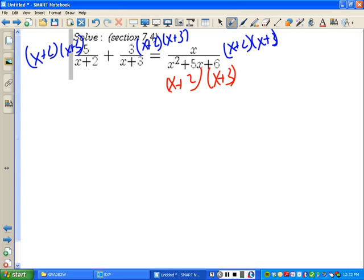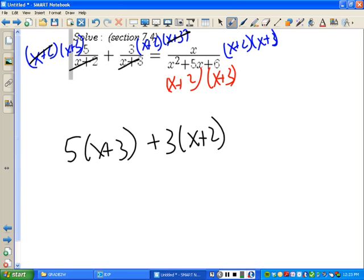Now, what happens when you do that? X plus 2, X plus 2 cancel, leaving you 5, X plus 3. X plus 3, X plus 3 cancel, leaving you 3, X plus 2. X plus 2, X plus 2, X plus 3, X plus 3 all cancel, leaving you with X.